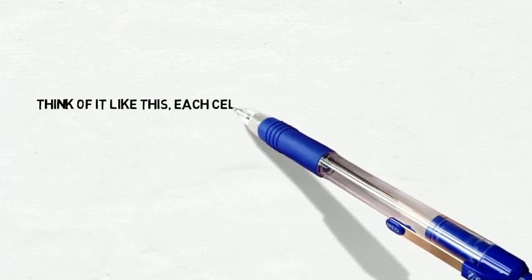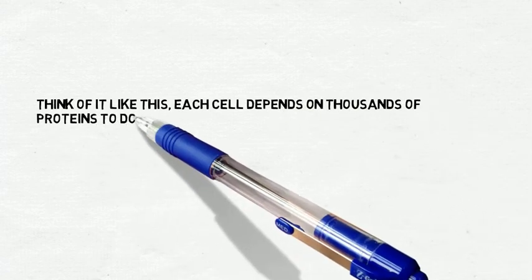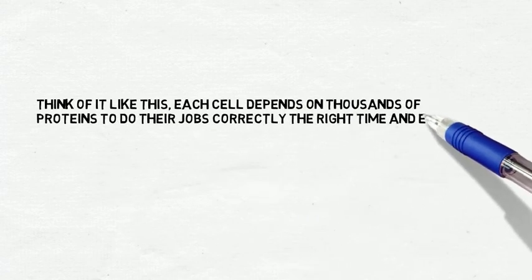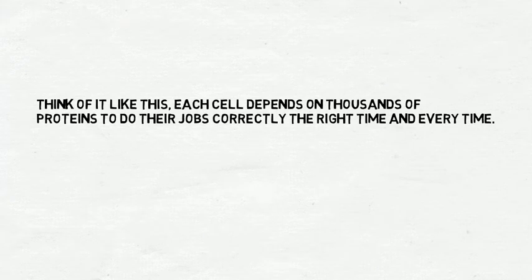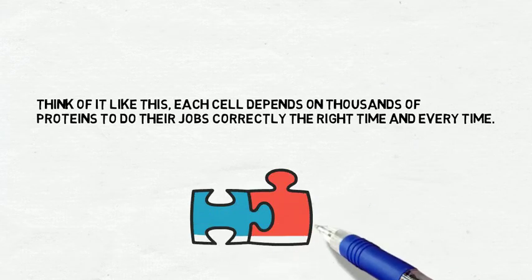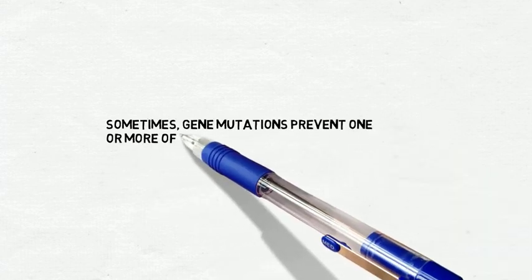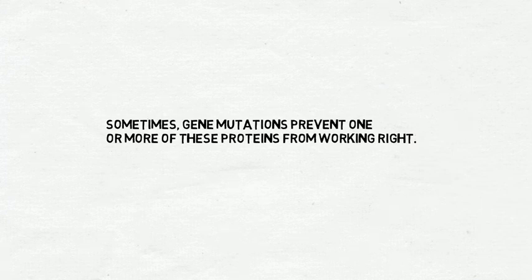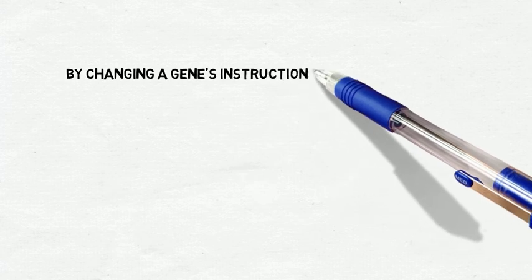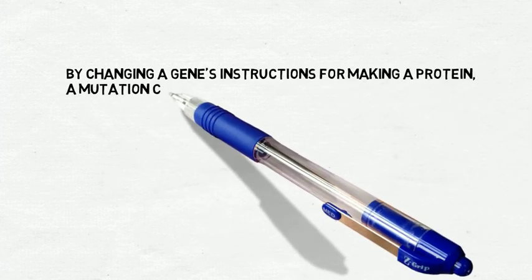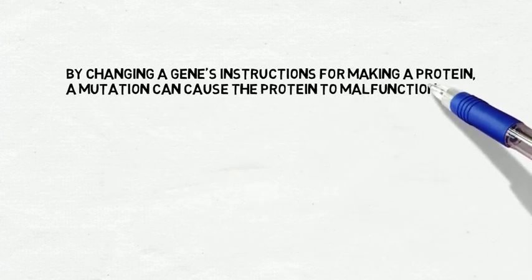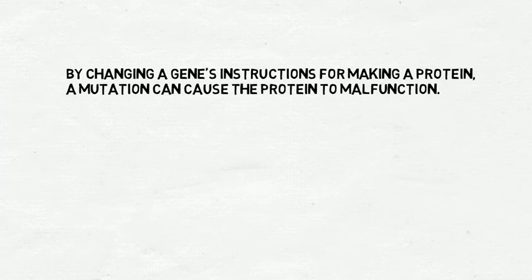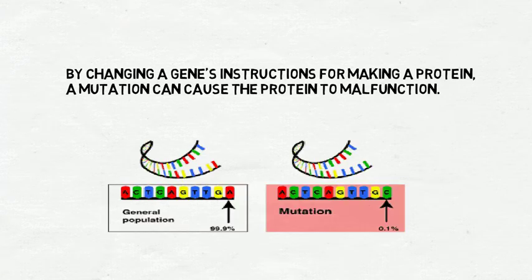Think of it like this: each cell depends on thousands of proteins to do their jobs correctly, at the right time, every time — all part of a puzzle. Sometimes gene mutations prevent one or more of these proteins from working right, which leads to problems. By changing a gene's instructions for making a protein, a mutation can cause the protein to malfunction, leading to errors, which you can see here below.